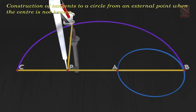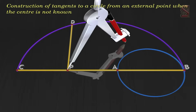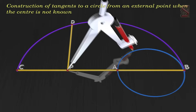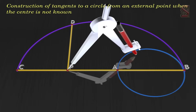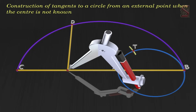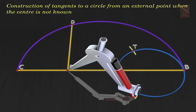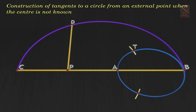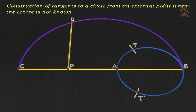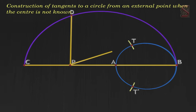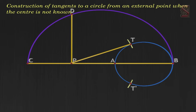Step 5: Draw PD perpendicular to CB, intersecting the semicircle at D. Step 6: With P as center and radius PD, draw arcs to intersect the given circle at T and T-dash. Step 7: Join PT and PT-dash. PT and PT-dash are the required tangents.